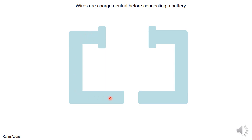Now let's look at a circuit — some wires in cross section. The wires are neutral before you connect the battery. The question we want to answer is: when you connect the battery and close the circuit, how does an electric field become established inside the wires?